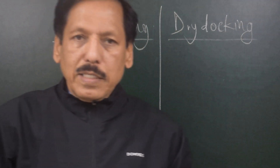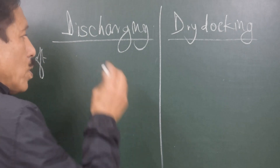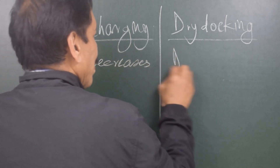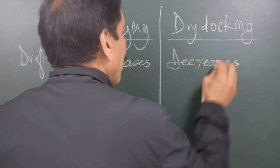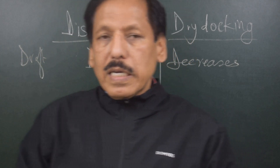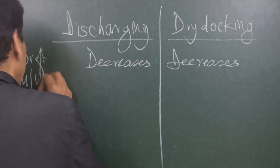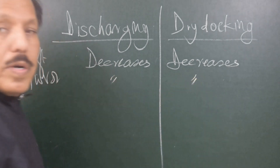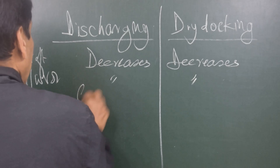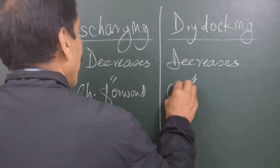Let us first understand the similarities. Number one — draught: in both processes the draught decreases. In both situations, whether we are discharging the weight or dry docking, the mean draught decreases. Number two — underwater volume also decreases. Number three — trim of the vessel changes forward in both cases.